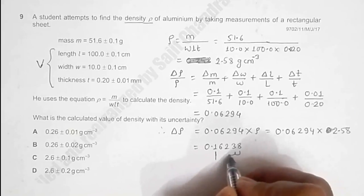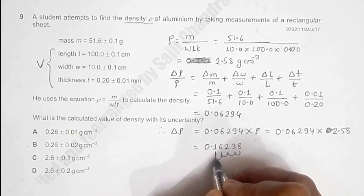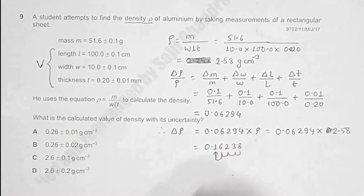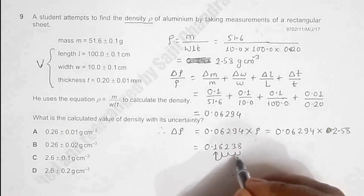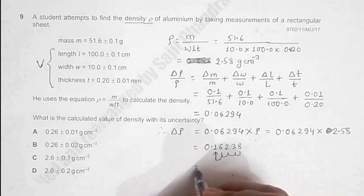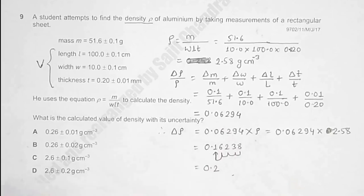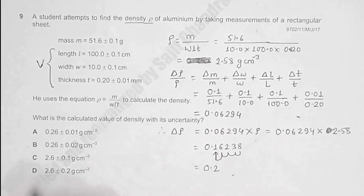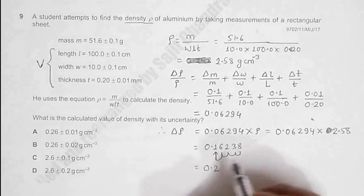So it should be equal to 0.2. The error 0.2 is available only in choice D. Since we have this error, now the main quantity will be - let's list it here - we have 2.58 and we